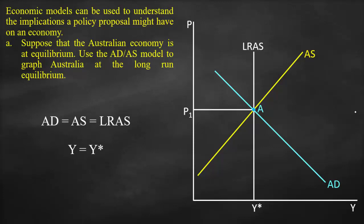Therefore, we know that our economy is at its potential output, its full employment output, because we reach Y-star — the three curves intersect at the same point.